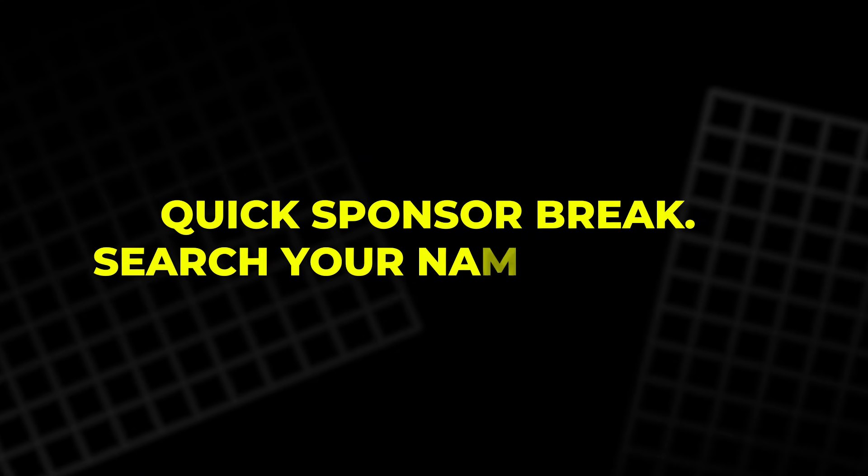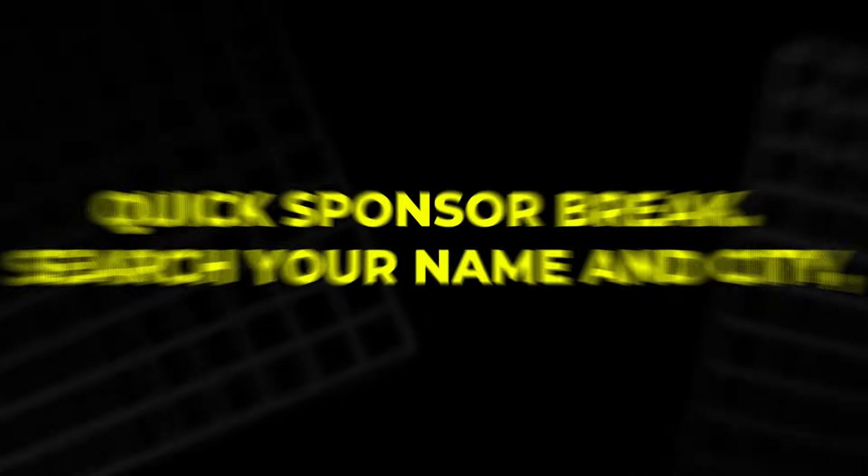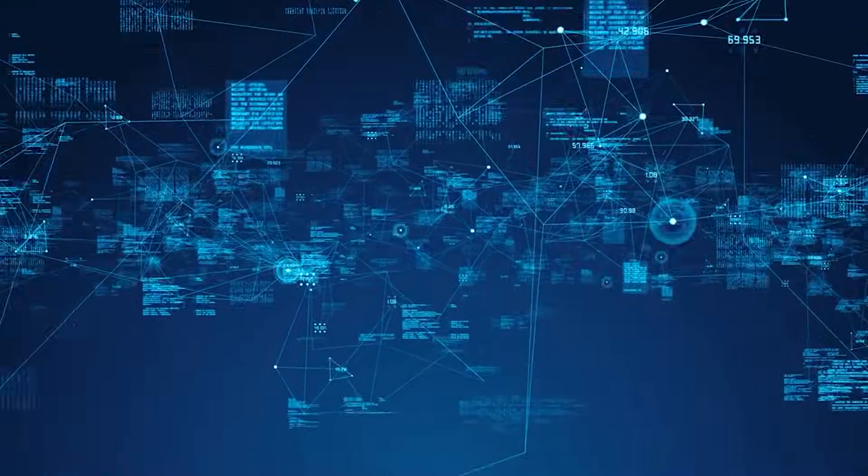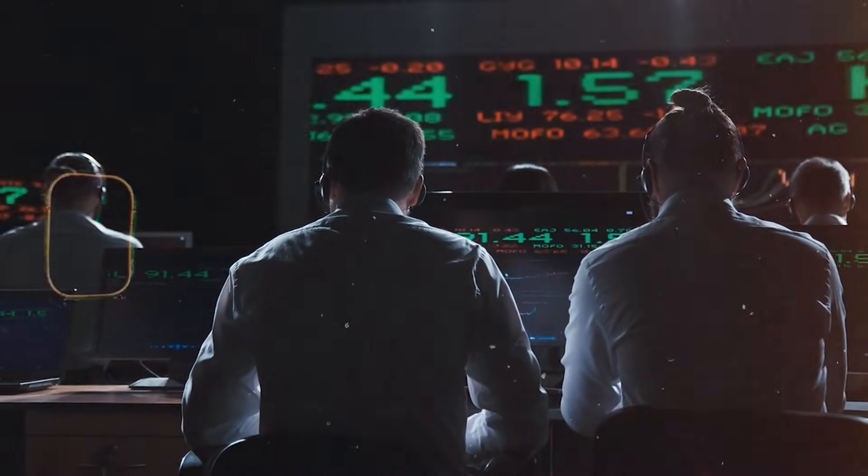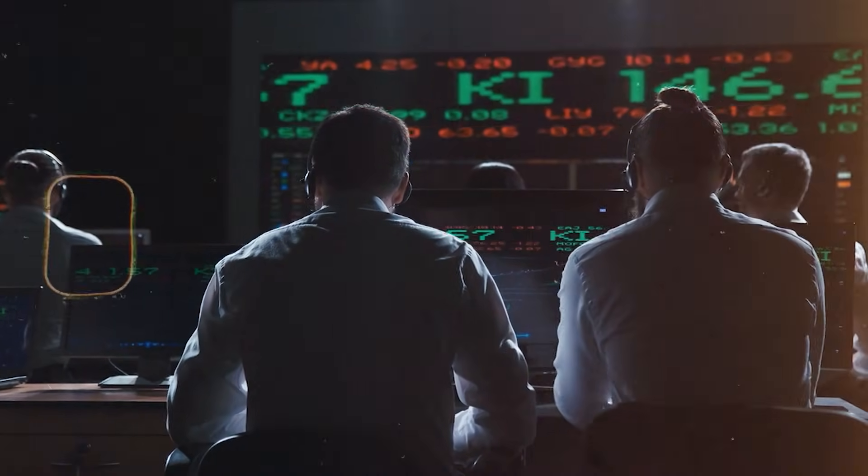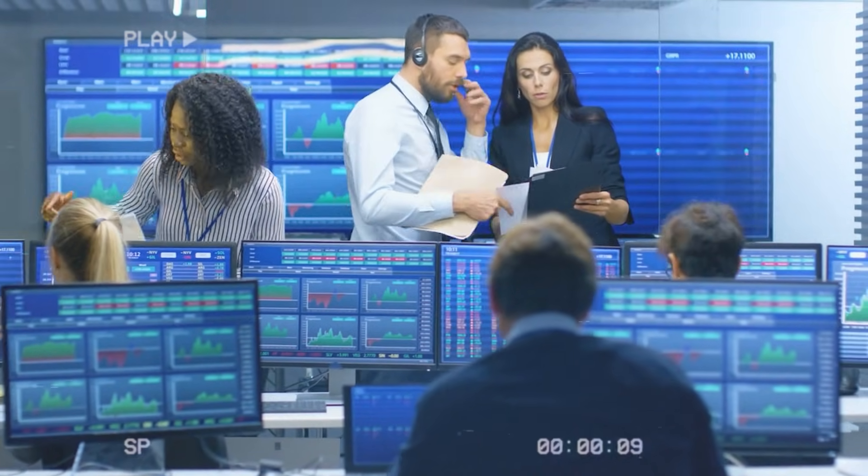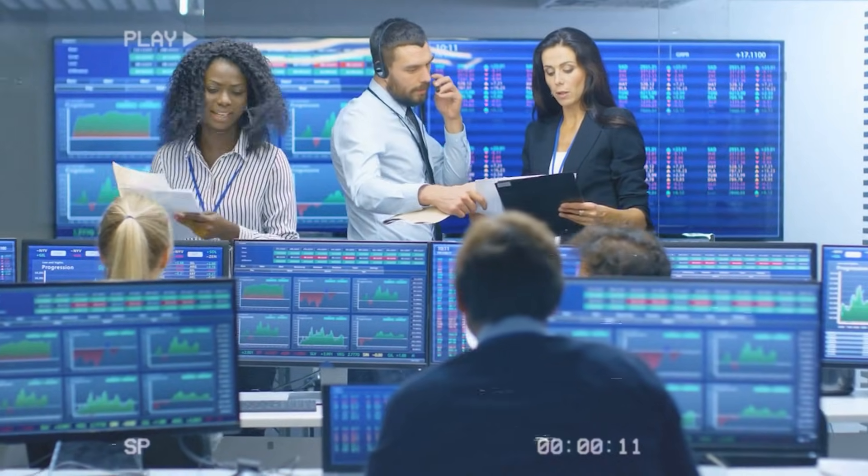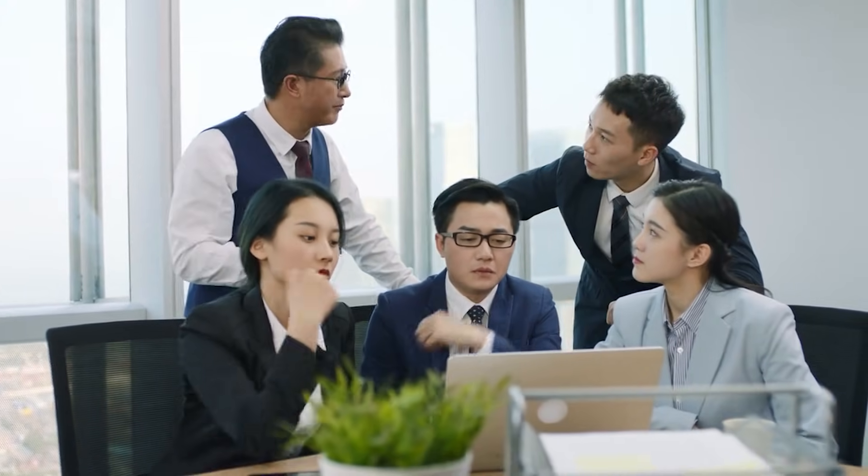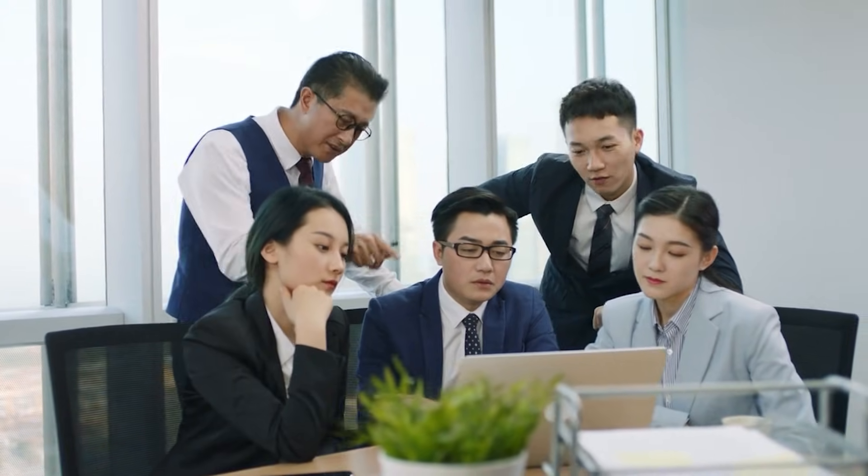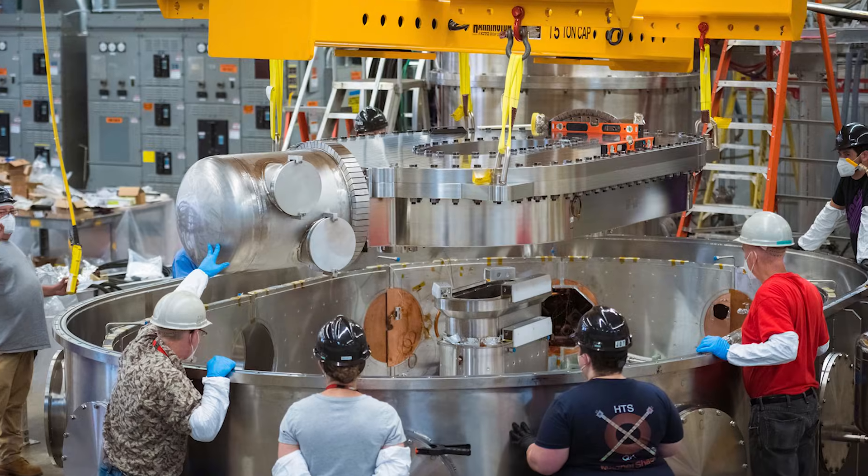Quick sponsor break. Search your name and city, and you might find your address or phone number on sites you never used. That data is collected and sold. Incogni helps remove personal details by requesting takedowns from data brokers. With the unlimited plan you can submit custom links, including Whitepages and Trellia, and their team handles the removals. Use code MEGAPROJECTS for 60% off an annual plan. Now, back to fusion.